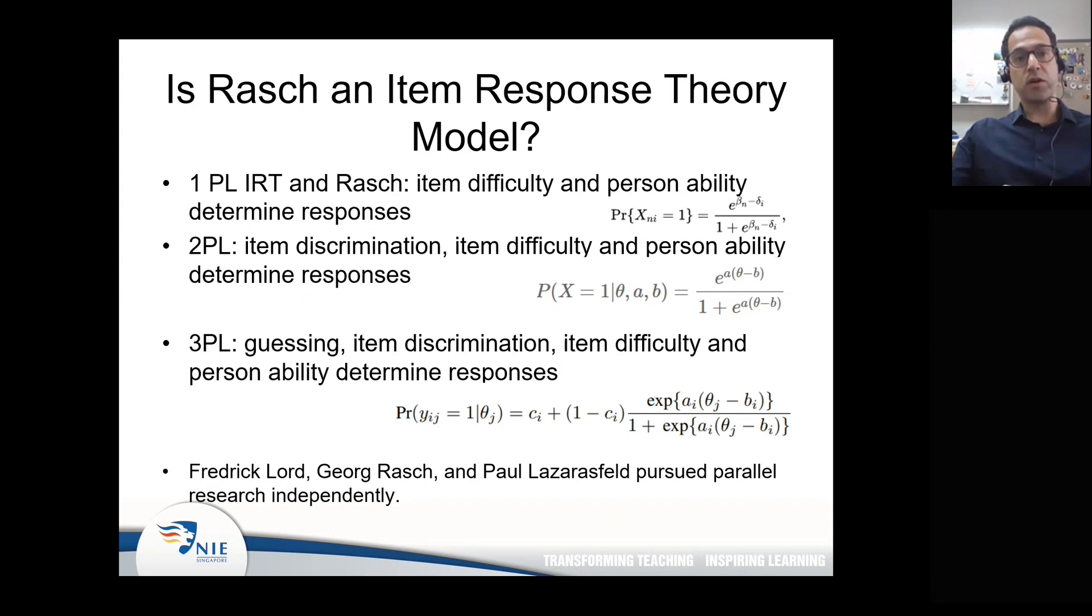Let's take a look at these three IRT models, which are the best-known IRT models being used in language assessment and other types of assessments. One PL or one parameter logistic IRT, which is analogous to Rasch measurement. Two PL, which is a two parameter logistic model in which, in addition to the two parameters I stated before, item discrimination is also a parameter. So your probability of answering an item is not only dependent upon your ability and the difficulty of the item, but also the discrimination parameter of the test item. The discrimination is represented by the slope of the test item.